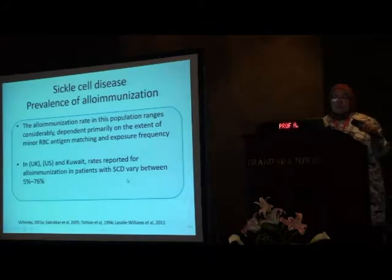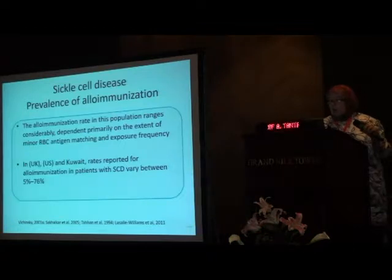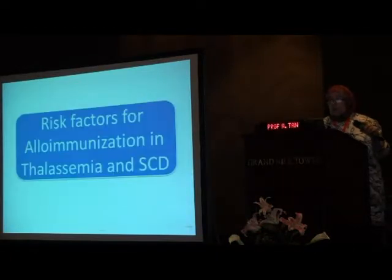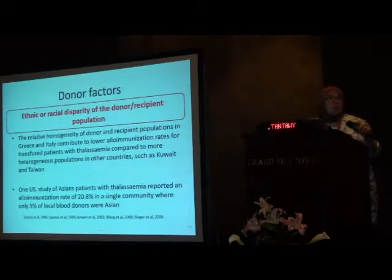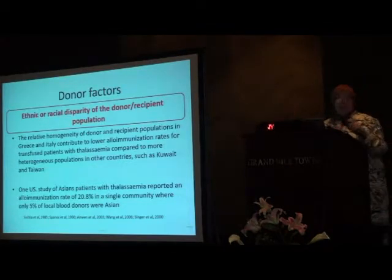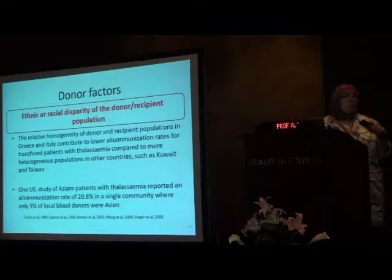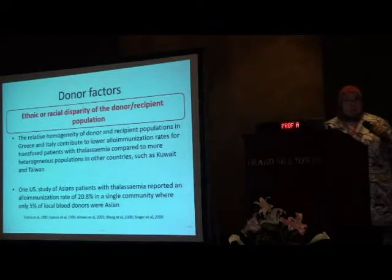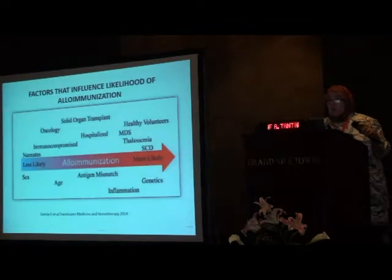Reports from the UK, USA, and Kuwait vary between 5% and 76%. There are host and donor factors. Number one: donor factors — ethnic or racial disparity between donor and recipient populations. If the donor is Caucasian and the recipient is African, they may have different red cell antigens, placing them at risk for alloimmunization. The more homogenous the populations, the less the alloimmunization.